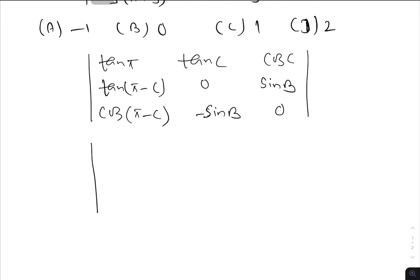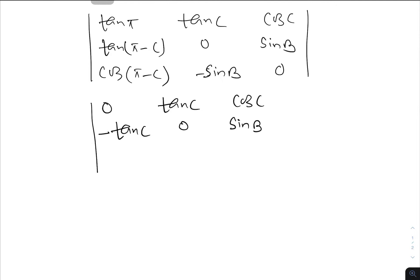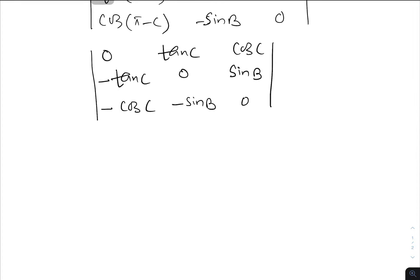We know tan π is 0, tan c, cos c. tan(π minus c) is in the second quadrant so tan is negative, giving minus tan c. This is 0, sin b. cos(π minus c) is again second quadrant, cosine negative, so minus cos c, minus sin b, and 0.